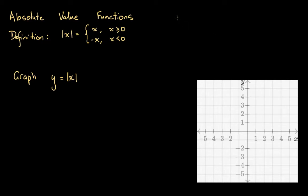Every now and then when you're doing questions you might see something like: what is the absolute value of negative 4? When you see these two horizontal lines — they're not 1's, they're longer than 1's — they're usually around negative or positive numbers or maybe even some expression. This means: what is the absolute value of whatever is within or between these two lines?